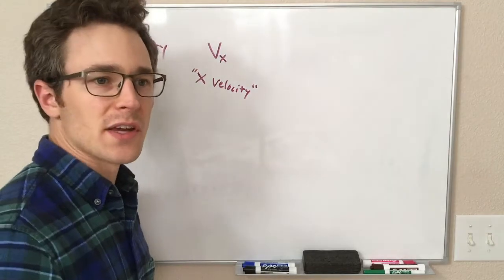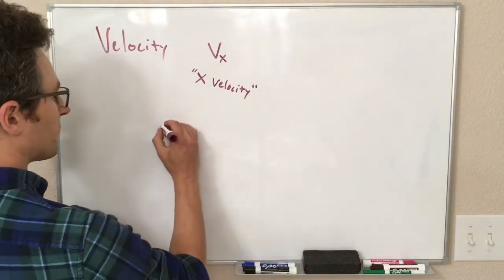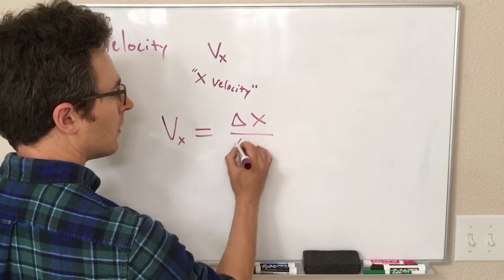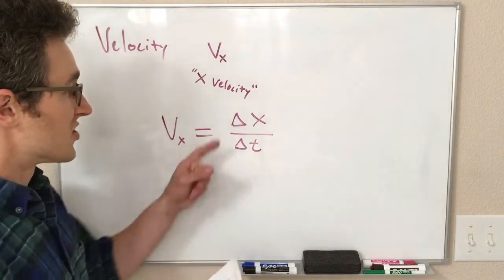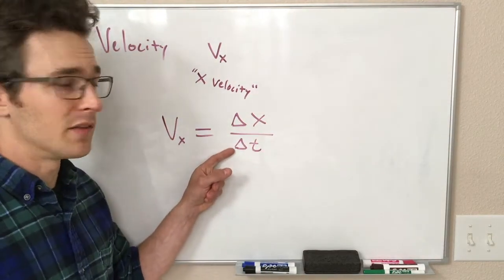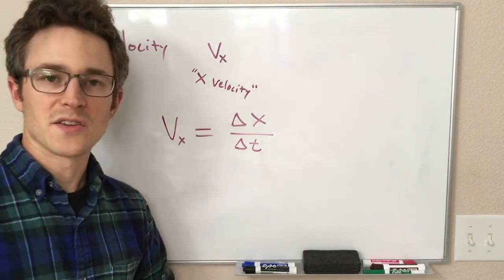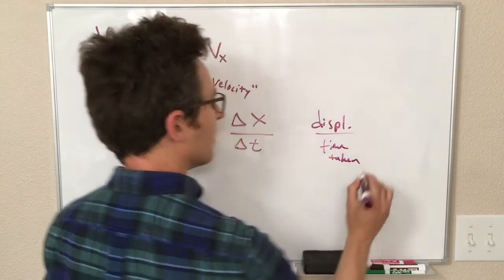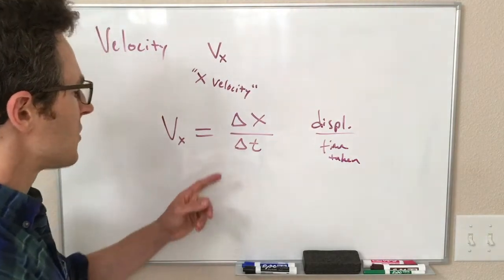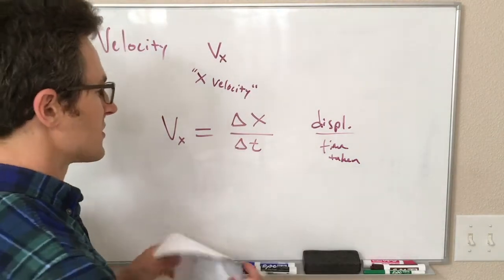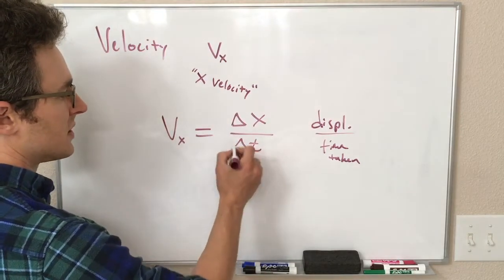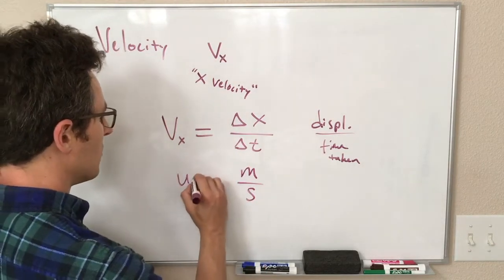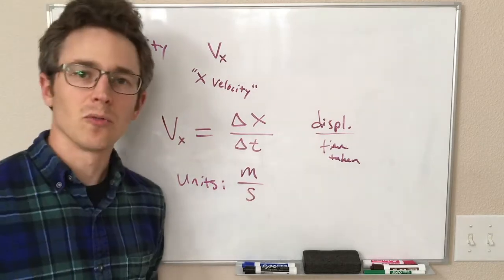I'm going to hold on the units for just a second, because we're going to look at the equation for velocity. So our velocity vx is equal to delta x, our displacement, divided by delta t, the amount of time it took to undergo that displacement. Displacement over the time taken. So our units of this are going to be our units of x over our units of t. So that is going to be meters over seconds. Our units of velocity are meters per second.